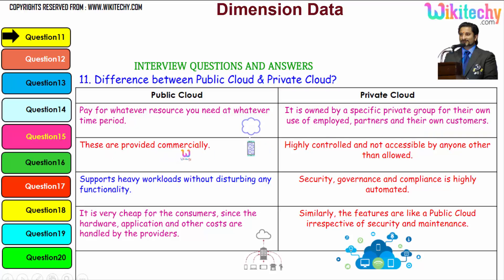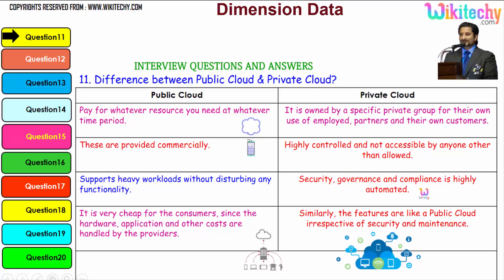Public cloud services are provided commercially. Private cloud is highly controlled and not accessible to anyone other than those allowed. It supports heavy workloads without disturbing any functionality. Security, governance, and compliance are highly automated. Public cloud is very cheap for consumers since the hardware, application, and other costs are handled by the providers.